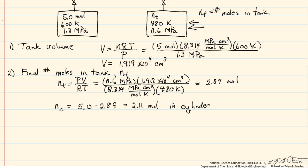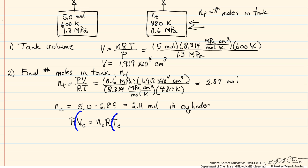This allows us to write a relationship from the ideal gas law for the cylinder: P_cylinder × V_cylinder = n_cylinder × R × T_cylinder. The pressure in the cylinder is of course the same as the pressure in the tank. There are two unknowns in this equation — volume and temperature — but this will be combined with the energy balance to solve for both.